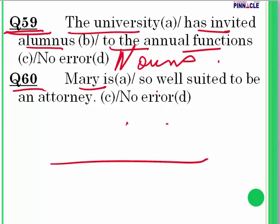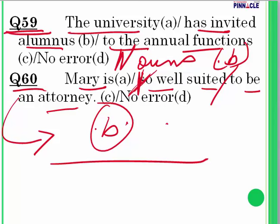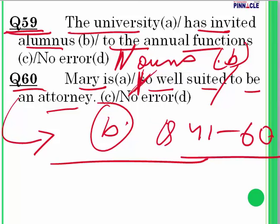Question 60: 'Mary is so well suited to be an attorney.' Sometimes the error involves an unnecessary word. Here, 'so' is redundant and must be eliminated: 'Mary is well suited to be an attorney.' Error is in part B. With that we come to the end of part 3, covering questions 41 to 60. We shall move on to part 4.